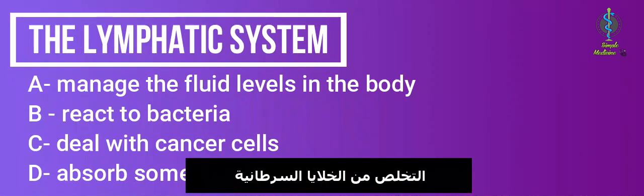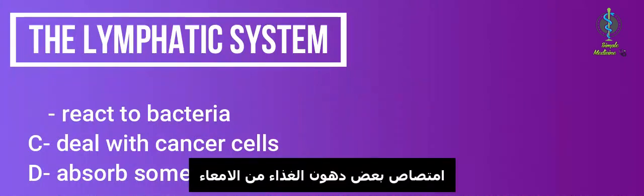Deal with cancer cells and absorb some of the fat in our diet from the intestine. The lymphatic system is made up of lymph nodes or lymph glands which trap microbes, lymph vessels that carry lymph, and white blood cells called lymphocytes.